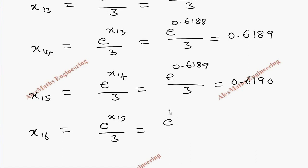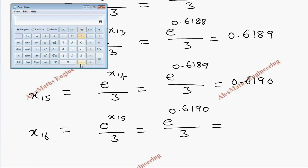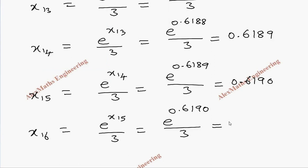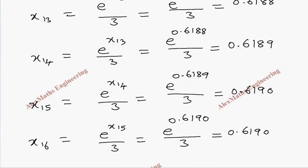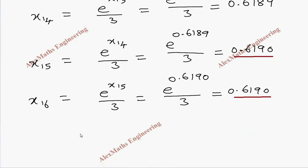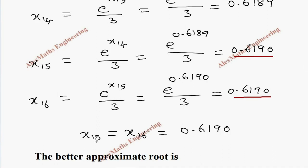Then x₁₆ = e^(x₁₅) / 3 = e^0.6190 / 3. Calculating: 0.6190 → e^x → divide by 3, rounded off gives 0.6190. Checking two successive values, x₁₅ = x₁₆ = 0.6190. So we can say the approximate root is 0.6190, correct to 4 decimal places.